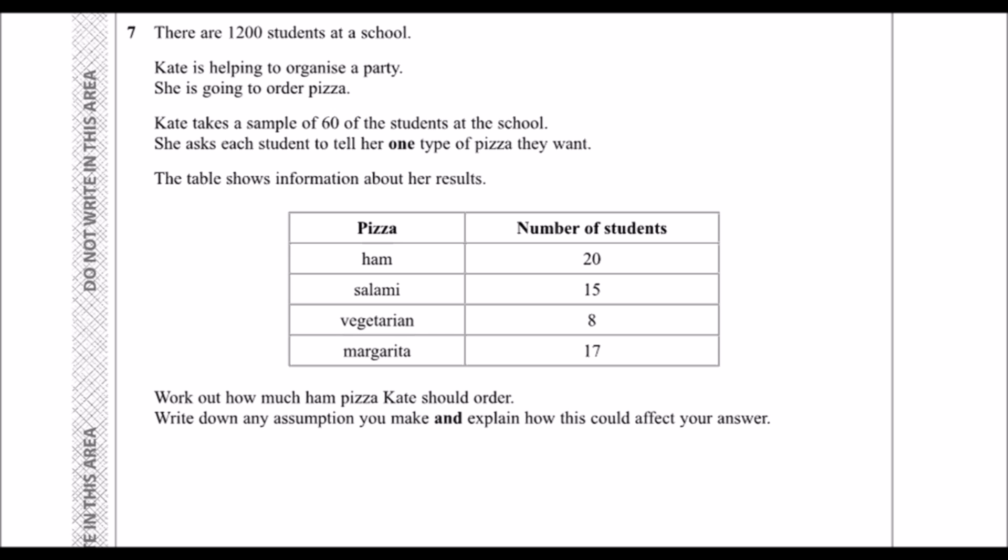Okay, this question says there are 1,200 students at a school. Kate is helping to organize a party and she is going to order some pizza. She takes a sample of 60 of the students at the school and asks them to tell her one type of pizza they want. So these are her results.